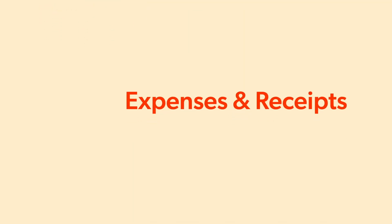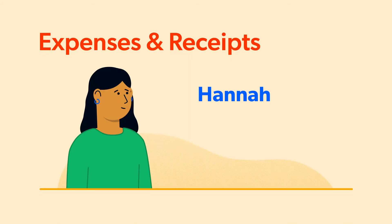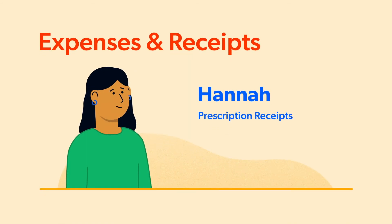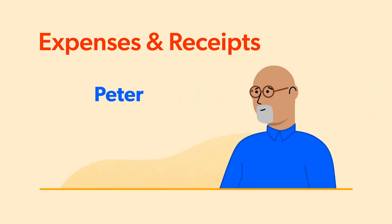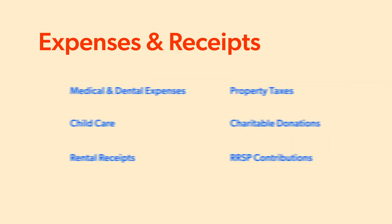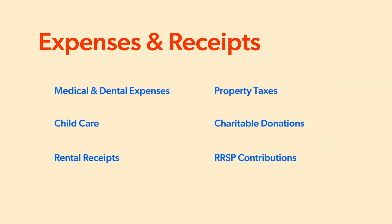With T slips covered, the next thing to consider are the various expenses and receipts that you may need. These can change depending on government programs for the tax year. Looking at Hannah's situation again, she has monthly prescription expenses — she'll need these receipts for her appointment. And Peter pays rent and needs proof of rent paid from his landlord in order to claim certain benefits.